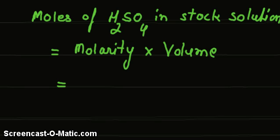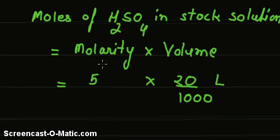So, moles of H2SO4 in the stock solution equals molarity times volume. Molarity is 5, volume is 20 ml, that is 20 divided by 1000 liters. And so we get 0.1 moles.